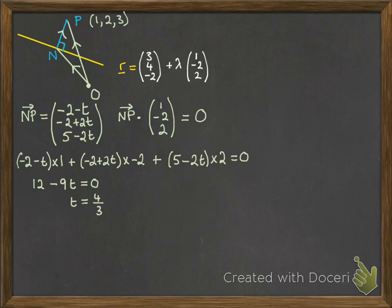That helps us to work out where N is. So N is the position on the line where lambda is equal to 4 thirds. So pop T into our equation for NP and we can work out the values. So now we have our position vector for NP.